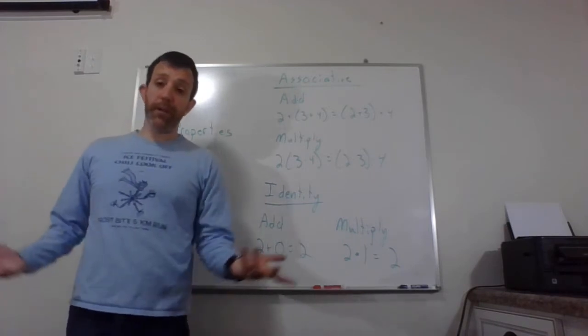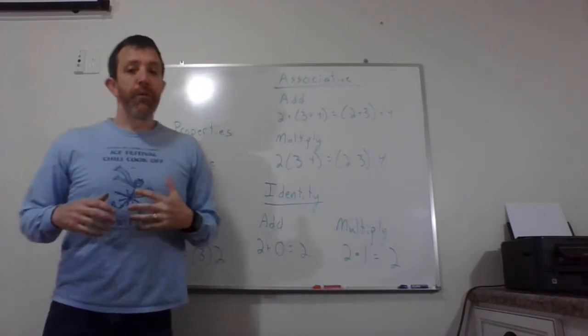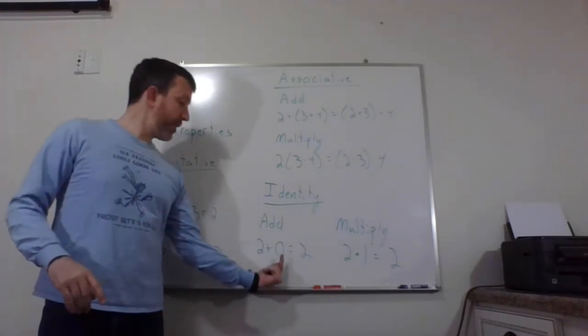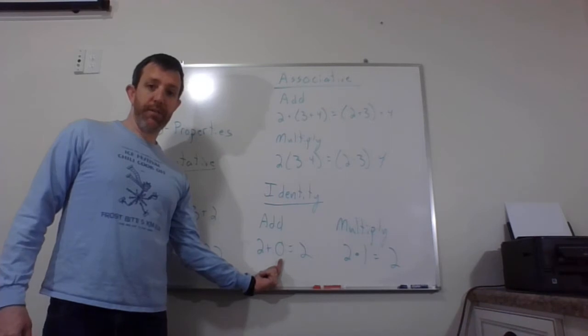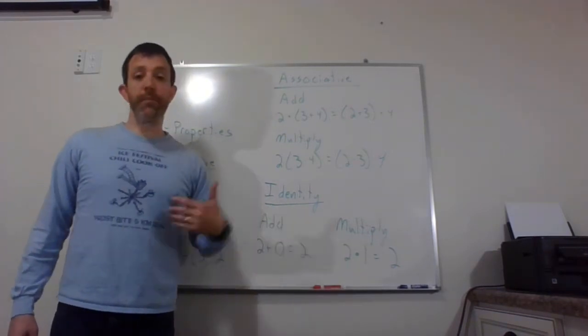And then finally, on this board, before I clear it off and give you another one, the identity property. Your identity is who you are, so nothing is going to change. For addition, that means you're adding zero. In this case, two plus zero is still two. And for multiplication, two times one is two.